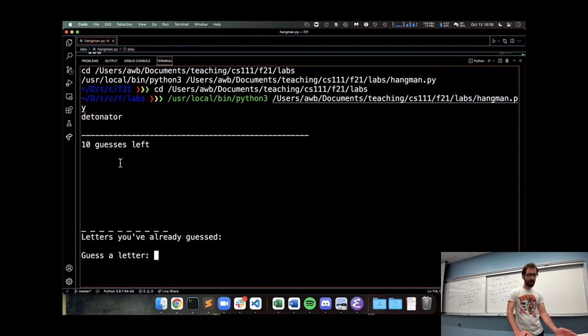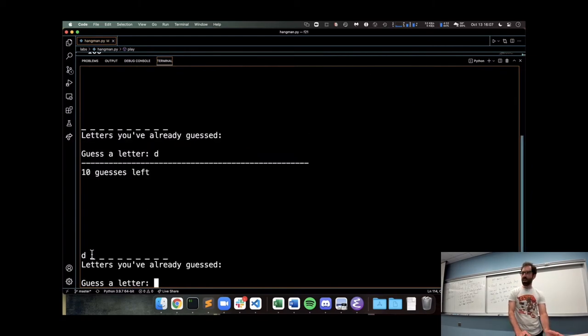Alright. The word is detonator because I have 10 guesses left. So, I guess D, puts D in front and it shouldn't subtract a guess for a correct guess, often how Hangman works. So, the next letter in detonator is E. Well, that's a problem. It got rid of my first correct guess. It's back to being an empty spot. D, E, D, E, D, E. So, it's not keeping track of the correct guess.